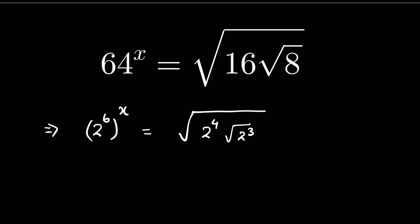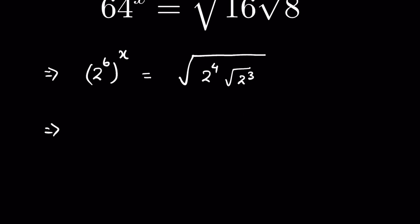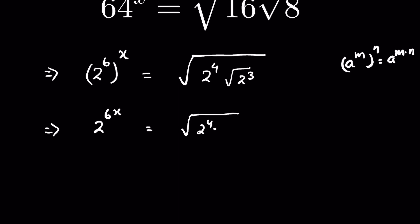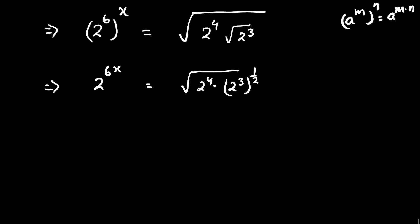Now 2 raised to the power 6, whole raised to the power x, equals 2 raised to the power 6x, because a raised to the power m, whole raised to the power n, is equal to a raised to the power m times n. The right side is 2 raised to the power 4 times 2 raised to the power 3, whole raised to the power 1 upon 2, because square root means raising to the power 1 upon 2.